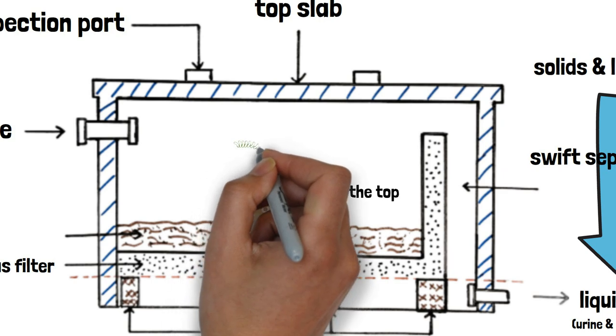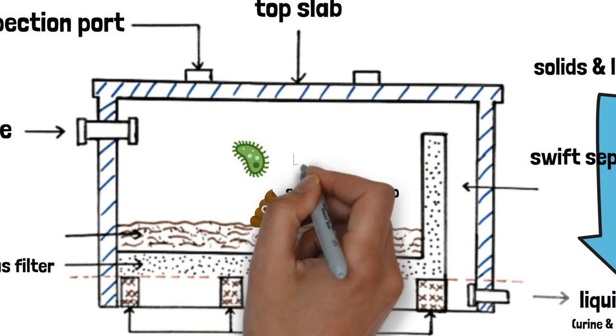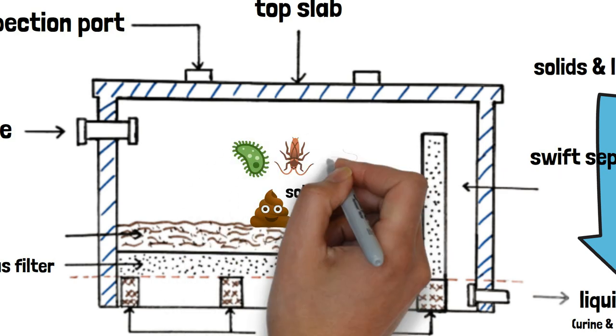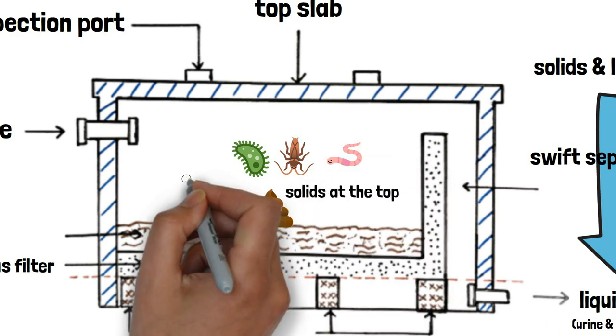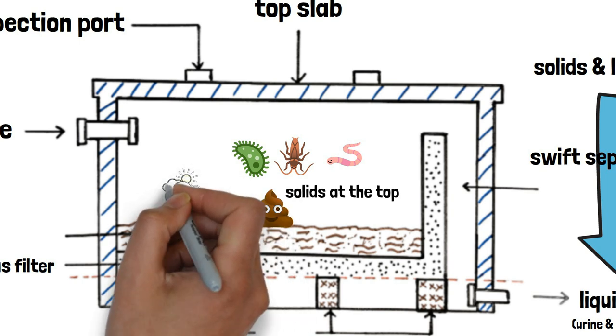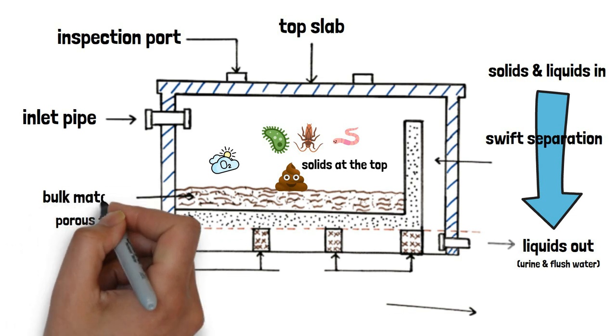Once the liquids in your black water have flown through the porous slabs, we need to handle the solids. That's where we introduce micro and macro organisms. They will work aerobically inside the biodigester, which means in the presence of oxygen.